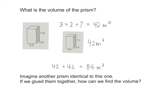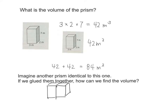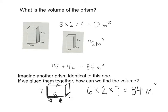We'd have the original prism next to another identical one. The length would be 3 for this one and 3 for the other, so the total length is 6. The height would still be 7, and the width would still be 2. So the new dimensions are length 6 meters, width 2 meters, height 7 meters. Six times 2 is 12, and 12 times 7 is 84 cubic meters — confirming the combined volume is 84 cubic meters.